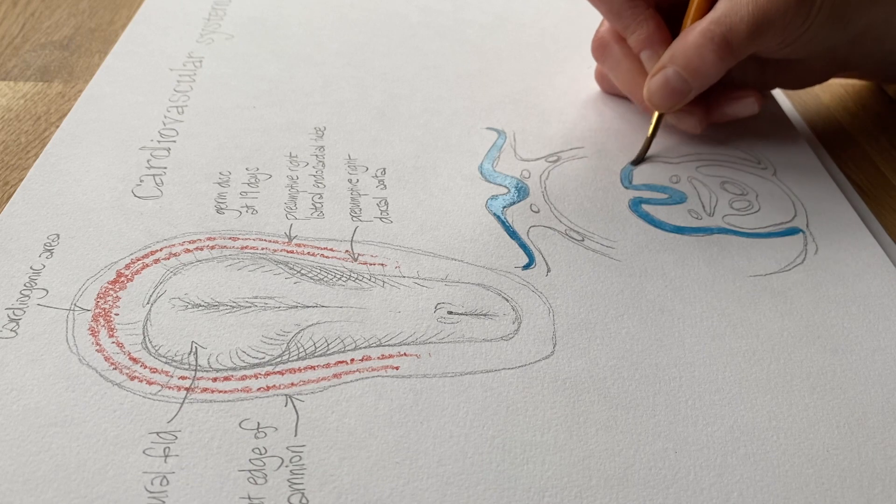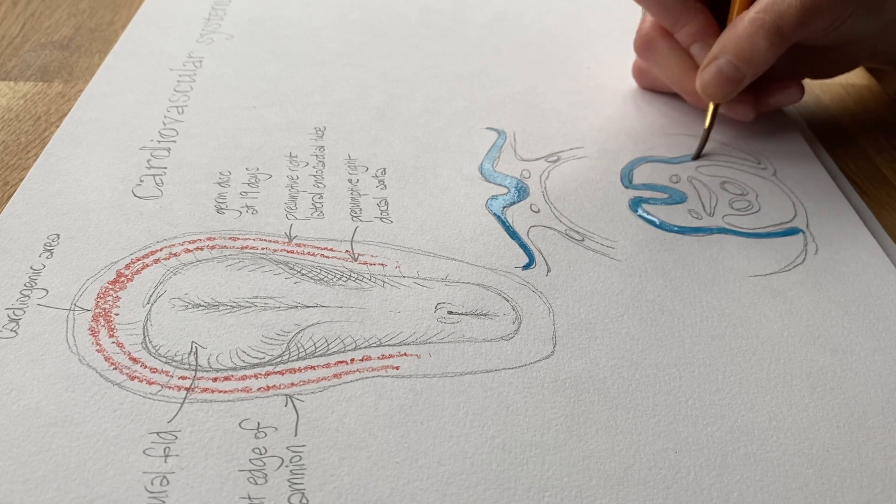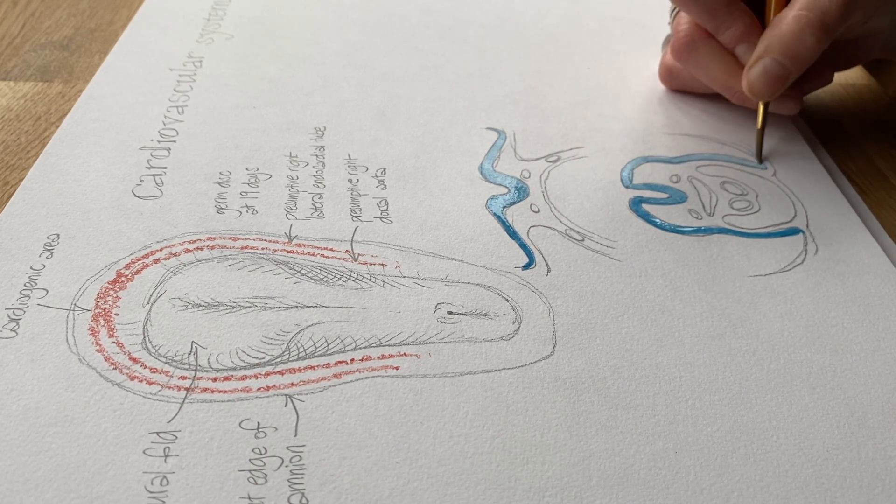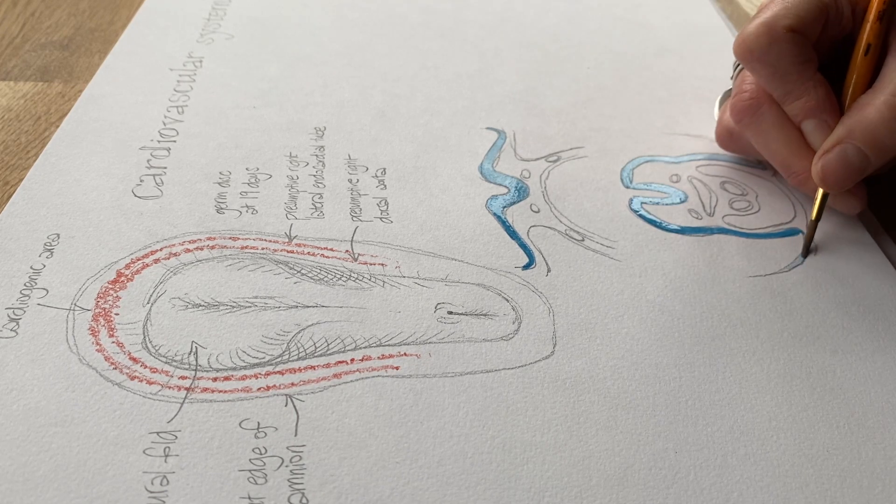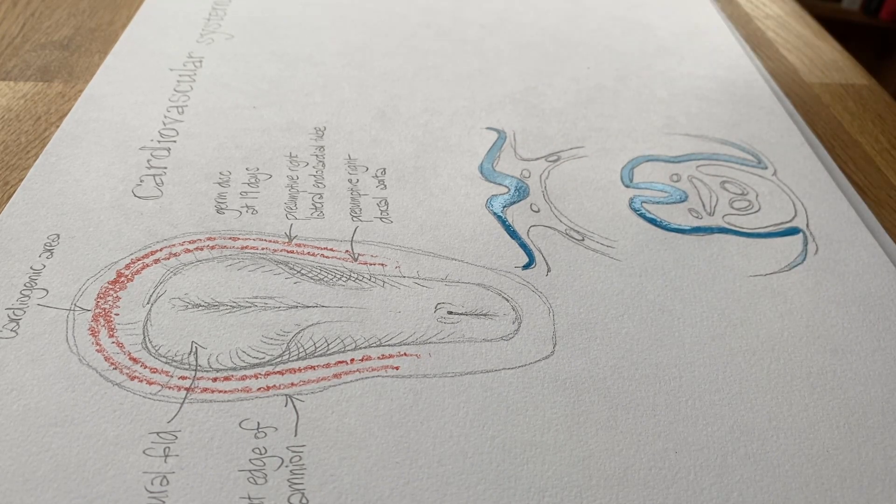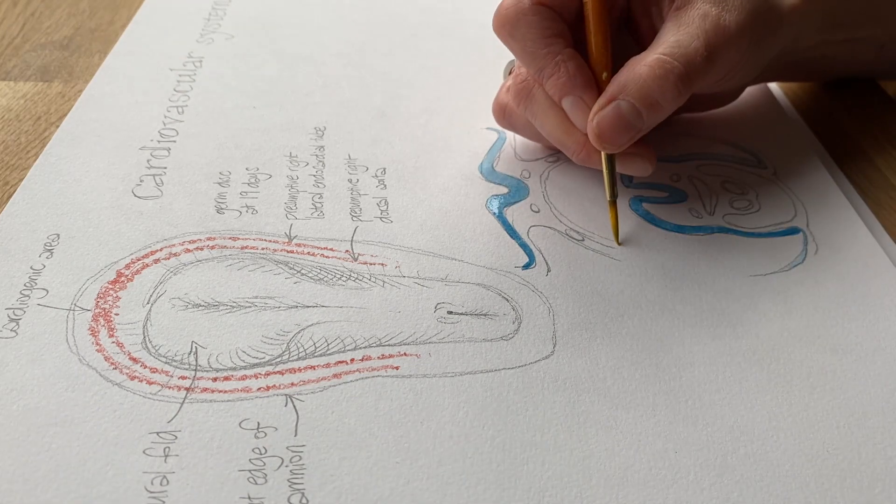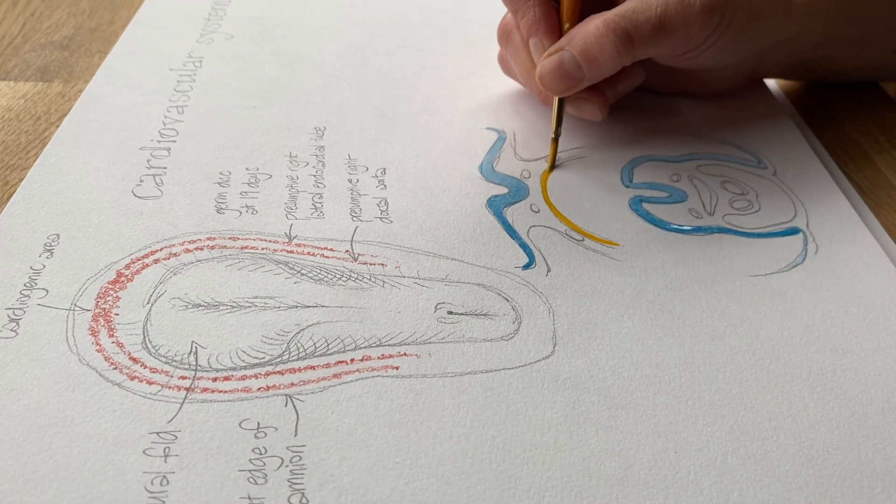And then I'm going to use orange for mesoderm. That includes the mesoderm which is forming these blood vessels and those blood cells.